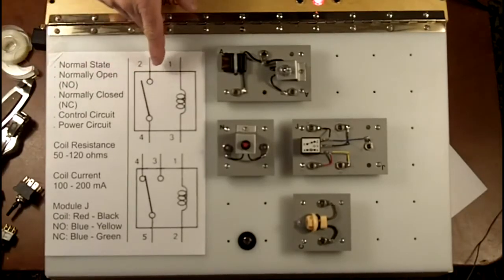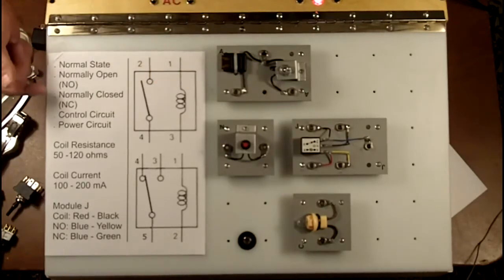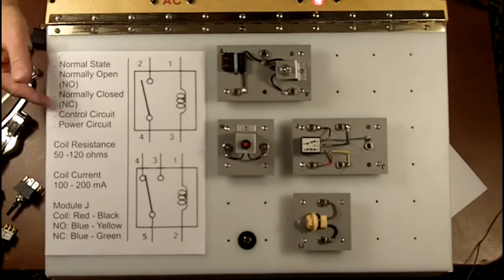And then they also make this relay available with this switch against the post on this side, so it would actually be closed until the magnetic field pulls it open. That would be called a normally closed 4-pin relay.